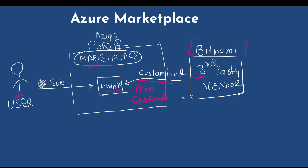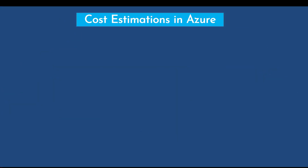These marketplace images are ready-to-use — you don't have to worry about any licensing cost or configuration setup. You simply subscribe to the image and use it, paying a nominal fee, for example ten dollars per month, to the vendor. You will also pay Azure for the underlying resources, such as the virtual machine running the Nginx image. The cost of the image itself is decided by the third-party vendor.